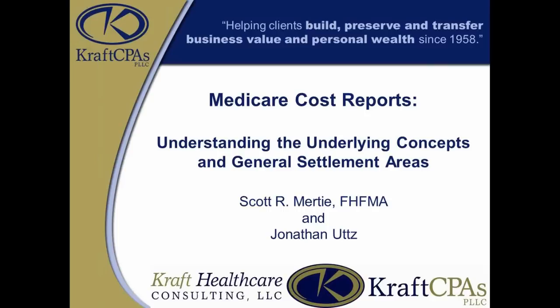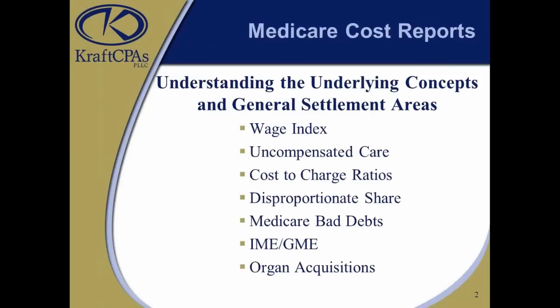The main areas we're going to focus on are: first, wage index and Worksheet S10, which reports uncompensated care — these indirectly affect reimbursement, with no settlement on the cost report related to these areas. Next is cost-to-charge ratios, which takes us from cost-finding all the way to matching cost to charges. For most prospective pay hospitals this is an indirect reimbursement impact with no cost report settlement; however, it does impact future rates.